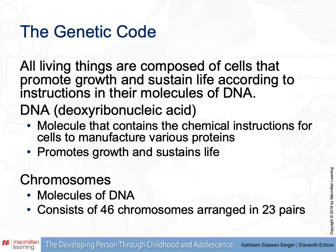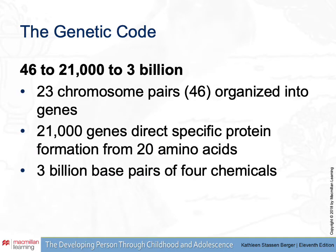Your chromosomes are molecules of DNA. In a human being, we have 23 pairs of chromosomes, which add up to 46. Your genetic code on these chromosomes is organized into segments of genes. There are approximately 21,000 genes that are involved in directing protein formation, which also involves things called amino acids. All of this is supported by 3 billion base pairs of four chemicals that come together in different combinations to create the genetic code.